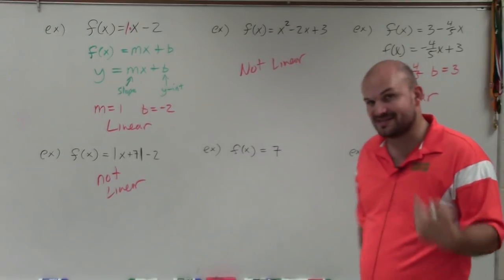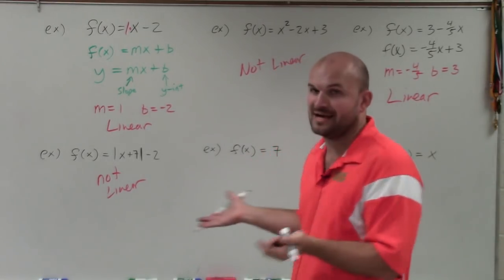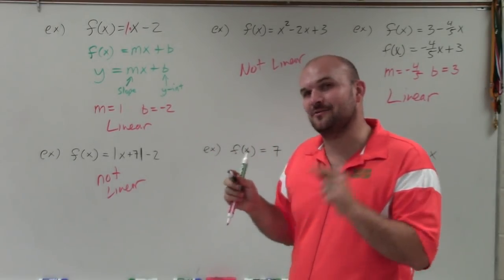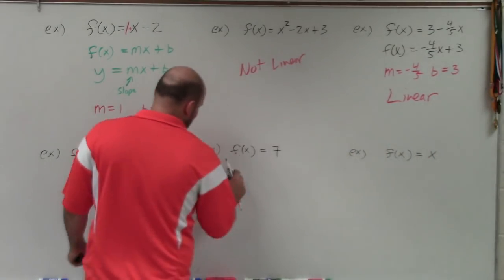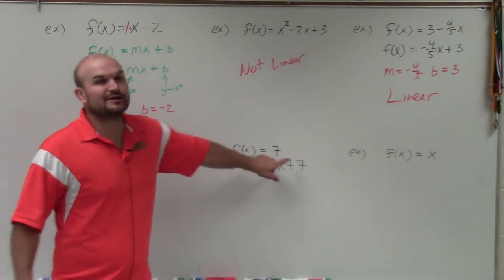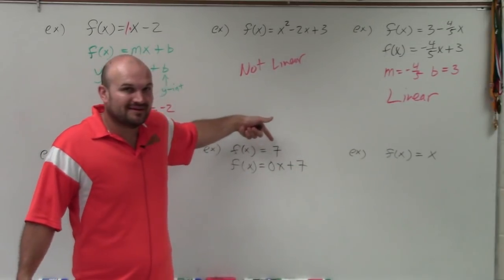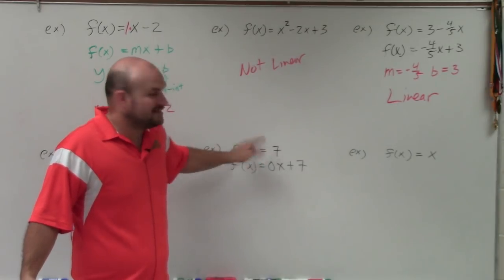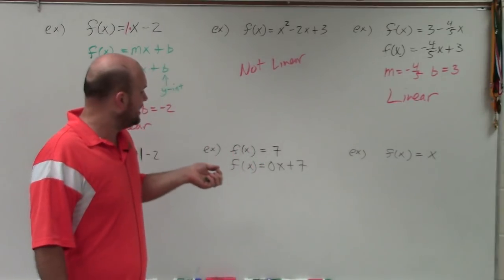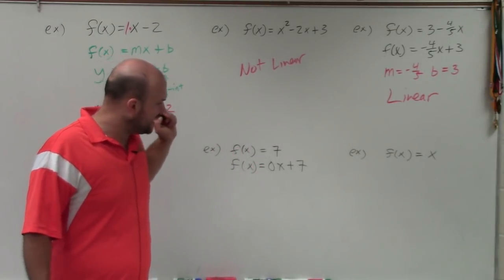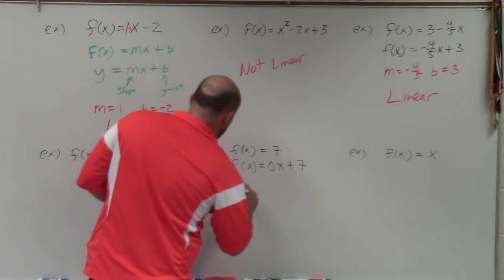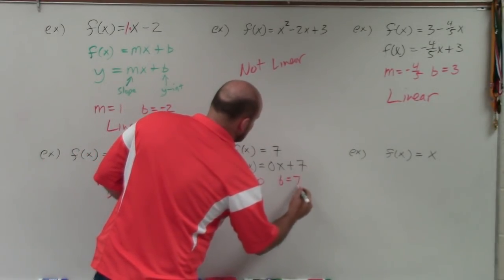For the next one, I have f of x equals 7. This one gets a lot of students because they say there's no x, so how can this be in linear form? Well, if we rewrite it with 0 as the coefficient, it would look like f of x equals 0x plus 7. What's 0 times x? It's 0. What's 0 plus 7? 7. If you were to graph f of x equals 7, it does produce a line — actually a horizontal line. So it is a linear function where m equals 0 and b equals 7. Linear.